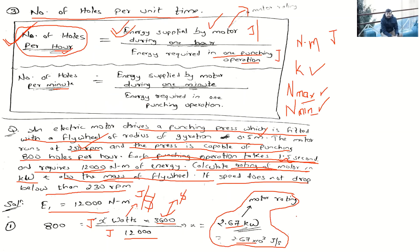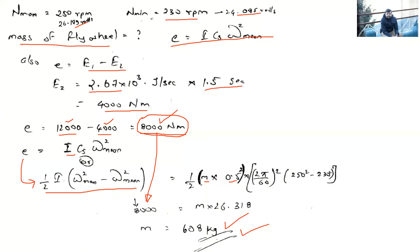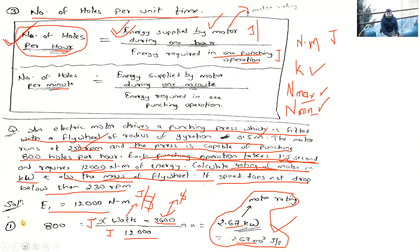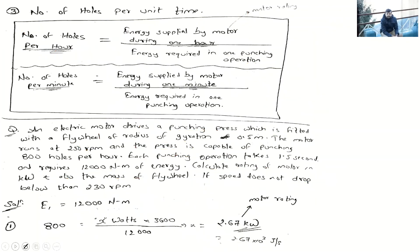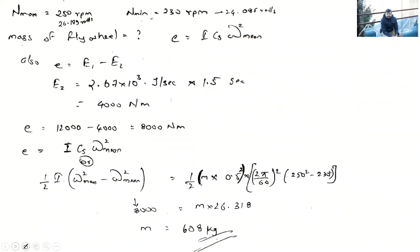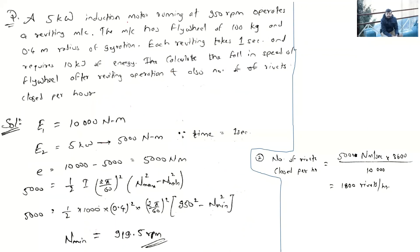So to summarize: first we calculated the rating of the motor as 2.67 kW, and second we calculated the mass of the flywheel as 608 kg. Now let's move to another question. A 5 kilowatt induction motor running at 950 RPM — the rating is 5 kW (5,000 joules/second) and 950 RPM is taken as n_max — drives a riveting machine.